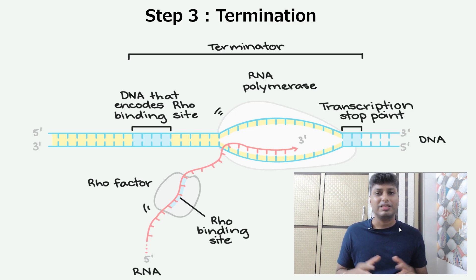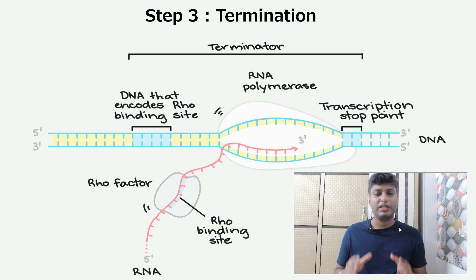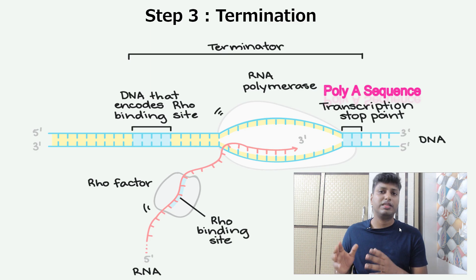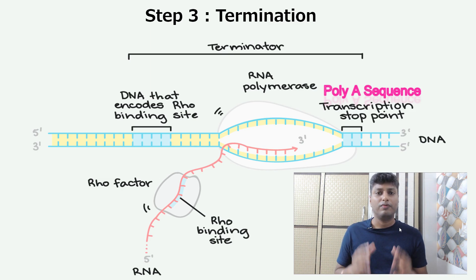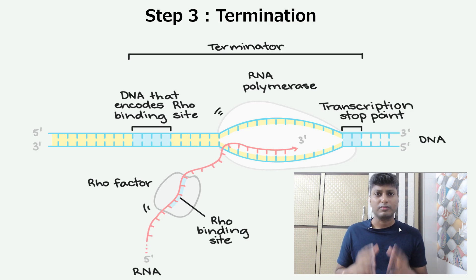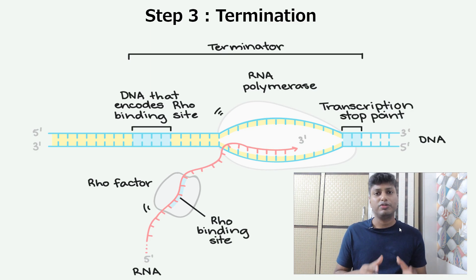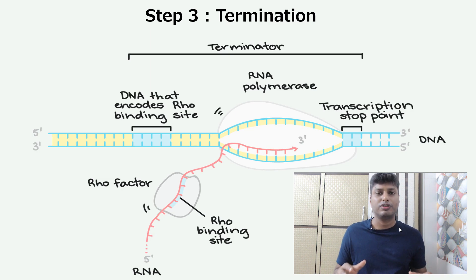How does it stop forming the RNA? As you can see in this diagram, once the RNA polymerase reaches a particular site on the DNA made up of a specific sequence — a poly-A sequence — it receives a termination signal. This signal is given by a particular factor called the Rho factor. The Rho factor attaches to the poly-A sequence and gives a termination signal to RNA polymerase to stop the process of transcription. As soon as this happens, the process of transcription stops, and the RNA which has been completely formed is released inside the nucleus of the cell — and the process of transcription is over.